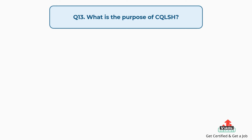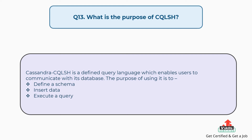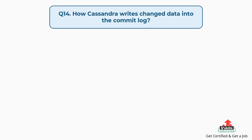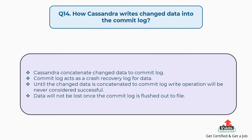Question number thirteen: What is the purpose of CQLSH? Cassandra CQLSH is a defined query language that enables users to communicate with its database. The purpose of using it is to define a schema, insert data, and execute a query. Question number fourteen: How does Cassandra write changed data into the commit log? Cassandra concatenates changed data to the commit log. The commit log acts as a crash recovery log for data. Until the changed data is concatenated to the commit log, a write operation will never be considered successful. Data will not be lost once the commit log is flushed out to file.